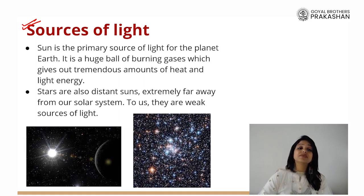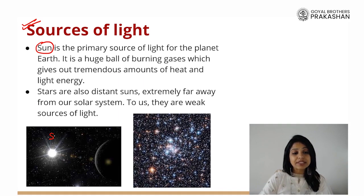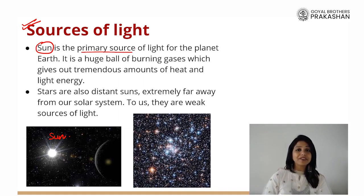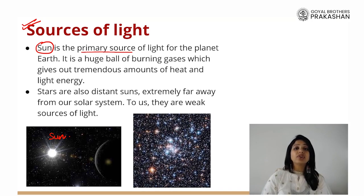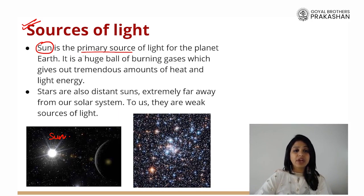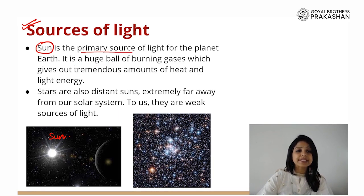So the first thing is we need to be very, very thankful to the sun. Our own sun is the ultimate source of light for earth. This is the primary source of light. In the morning, do we have to turn on the electric bulb? No. It is the sunlight. The ample sunlight makes everything around us lit. Sun is the primary source of light on our planet. It is a huge ball of burning gases which gives out a tremendous amount of heat and light.